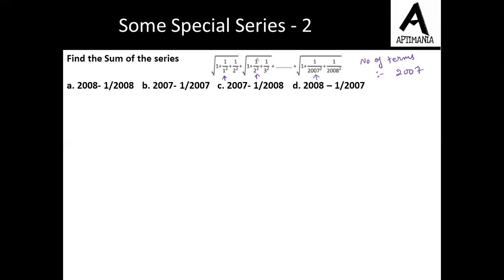Now let us focus on this particular root. This is 1 + 1/1² + 1/2², so this is basically 1 + 1 + 1/4. The second is √(1 + 1/4 + 1/9), the next would be √(1 + 1/9 + 1/16), and so on. This series is going till the last term 1 + 1/2007² + 1/2008².